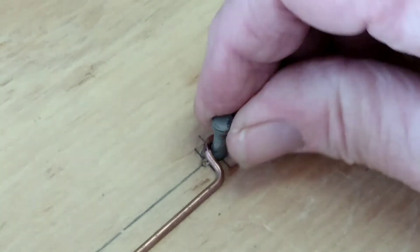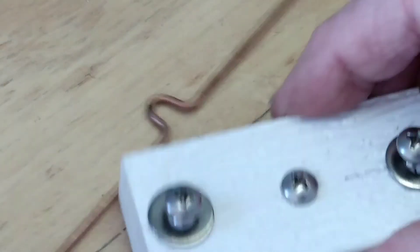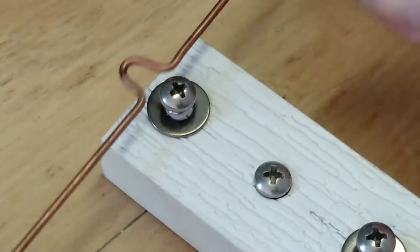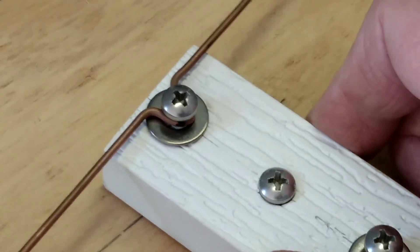There. So now we have a loop and a phase line. And that will fit very nicely under a screw. It'll sit flat.